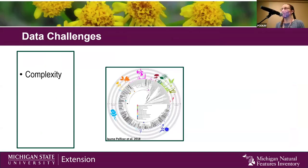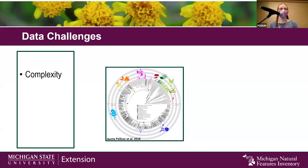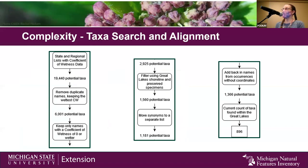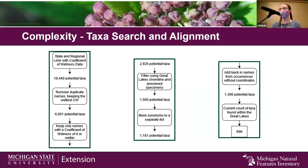I'm going to talk about a couple of different challenges we had with our data and the things we used to solve those challenges. The first big challenge was data complexity. Just like the benthic invertebrates, plants have undergone extensive changes in taxonomy in recent years with phylogenetic advances. And then there's also the question of what counts as a vascular plant in the Great Lakes. This is a little bit of a flow chart of the taxa search and alignment process. The first question: what counts as an aquatic plant in the Great Lakes? This is the water life database, so we really want to focus on things that are found in the water and in the Great Lakes.